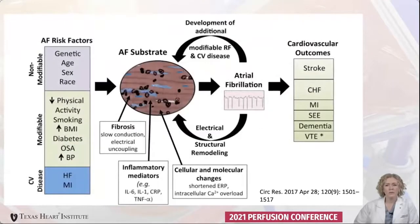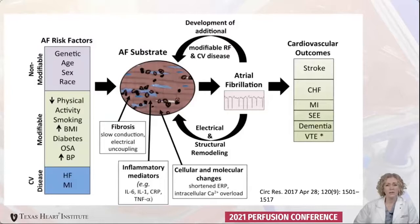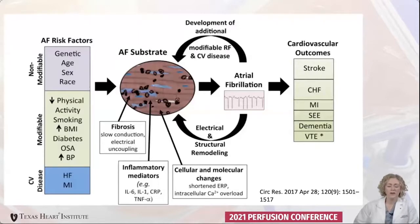The AFib risk factors induce structural changes in the atrium, leading to fibrosis of the tissue, inflammation, and cellular changes. These changes increase the susceptibility to AFib. Persistent AFib then further induces electrical and structural remodeling, which promotes more AFib. The term 'AFib begets AFib' is common because the longer people are in AFib, the more likely they are to continue in AFib.